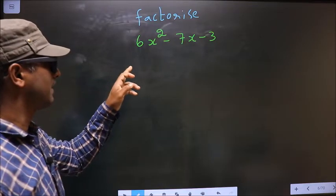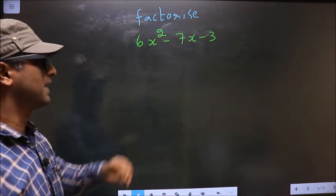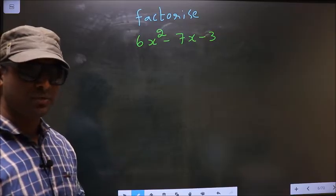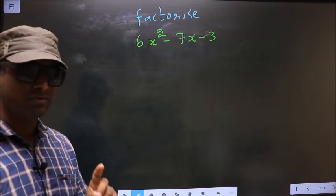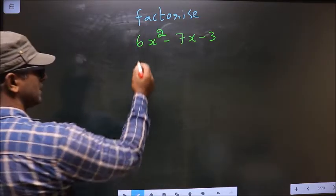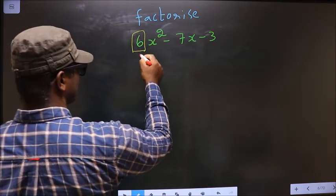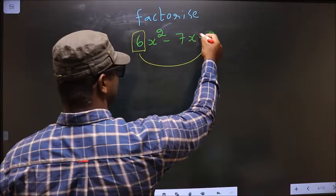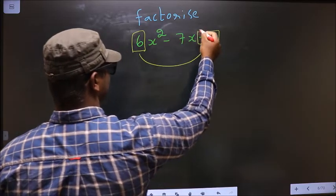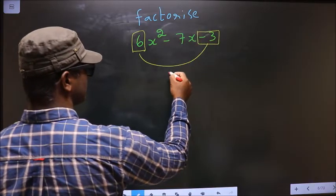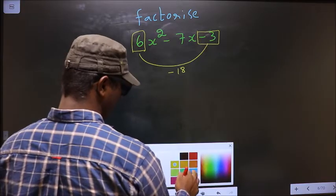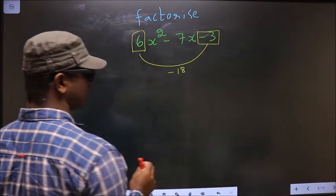Factorize 6x square minus 7x minus 3. To factorize, step 1: the coefficient of x square, that is 6, should be multiplied to the constant, that is minus 3. So 6 into minus 3 is minus 18. This is your step 1.